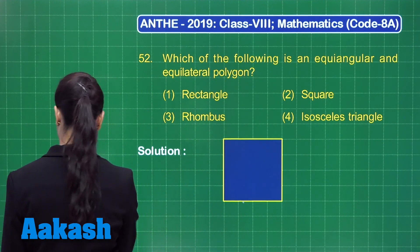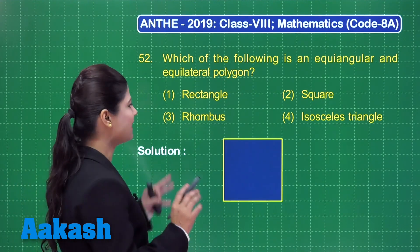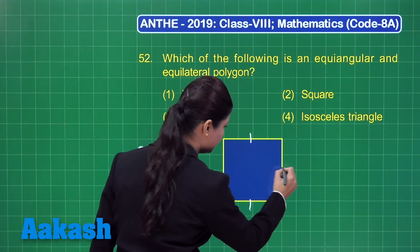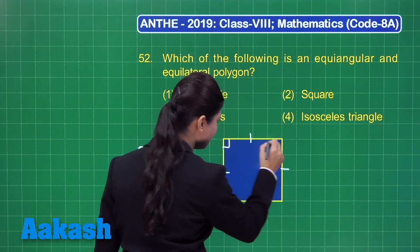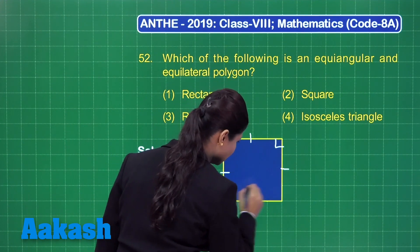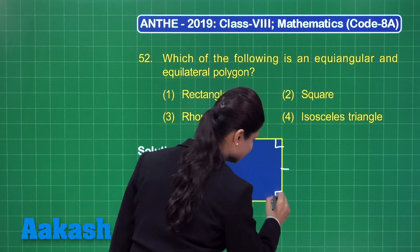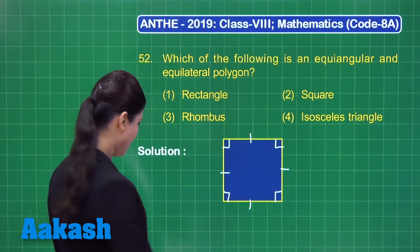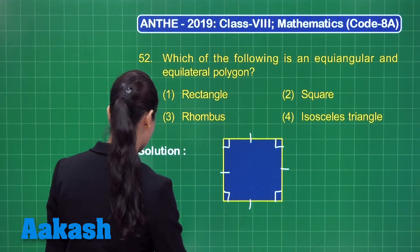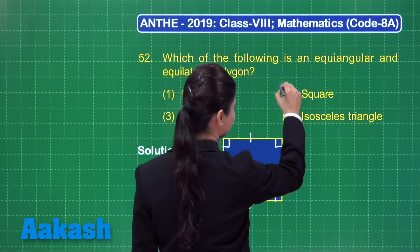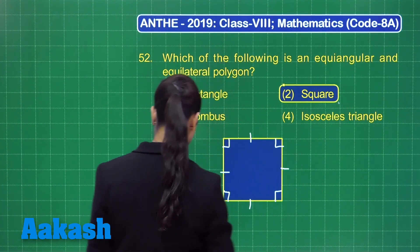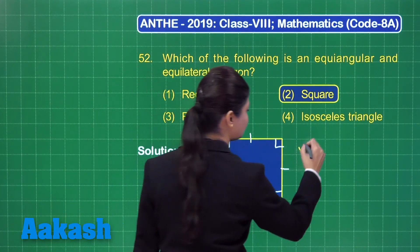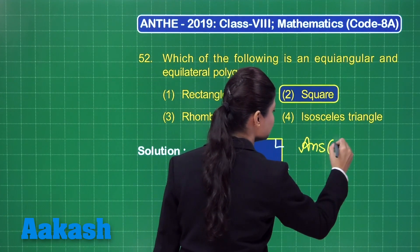This is a square. You can observe that in a square, all four sides are equal and all four angles measure equal to 90 degrees. So this is the equiangular and equilateral polygon. Out of these four options, the correct answer is option number 2.